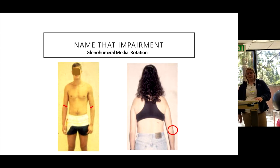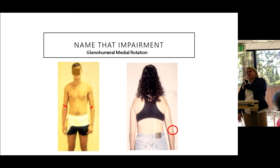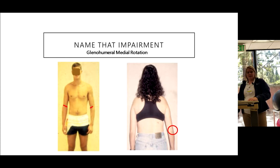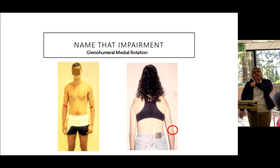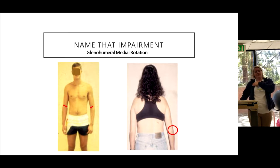For glenohumeral medial rotation, all your medial rotators attaching to the humerus — lats, teres major, subscapularis — are too stiff, while your lateral rotators — infraspinatus, supraspinatus, teres minor — are not pulling back enough.